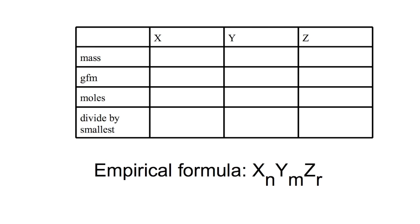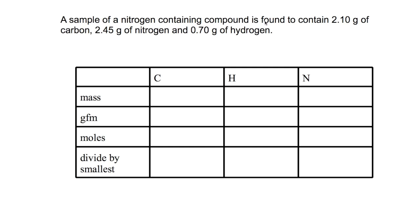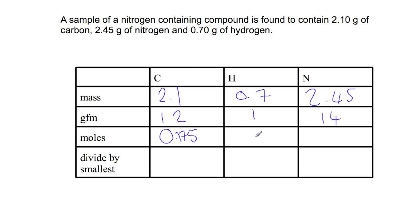Let's have a look at an example. Here we have a sample of a nitrogen-containing compound which is found to contain 2.1g of carbon, 2.45g of nitrogen and 0.7g of hydrogen. We insert these into the table. In the next line we put in the gram formula mass: 12 for carbon, 1 for hydrogen and 14 for nitrogen. We then do mass divided by gram formula mass to find the moles: 0.175 for carbon, 0.7 for hydrogen and 0.175 for nitrogen. The smallest number is 0.175 for carbon and nitrogen.